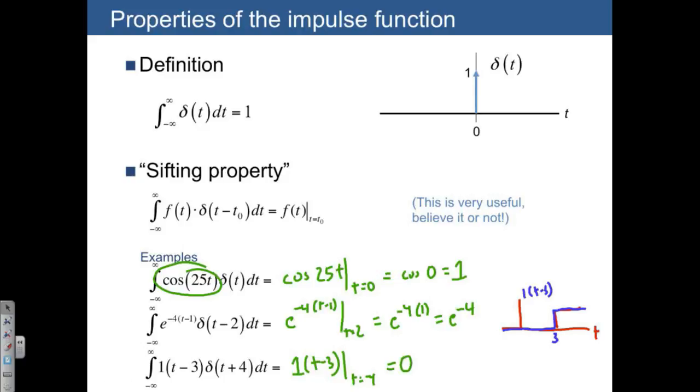So those are three examples of the sifting property of the unit impulse function.